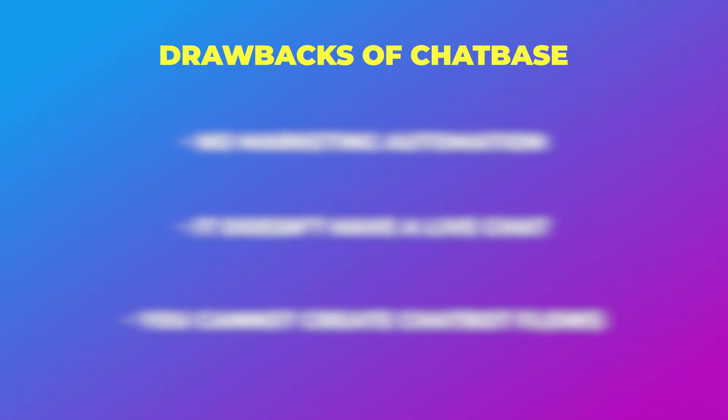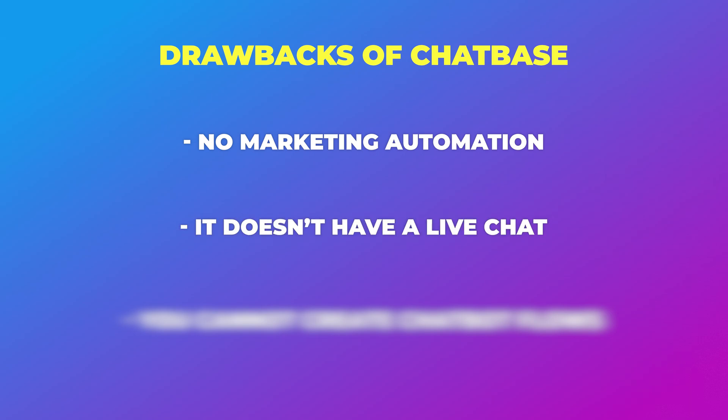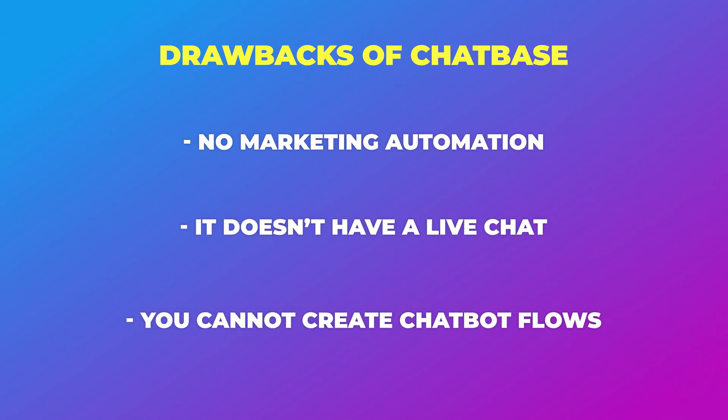But there are a few drawbacks of Chatbase. It's really good at training itself on documents or your website using AI, but that's basically all it's good at. It doesn't have marketing automation, it doesn't have a live chat, and you cannot create your own custom chatbot flows. So if you're looking for an automation platform with those features, a good connection with ChatGPT, and the ability to add it to many channels, then you should have a look at uChat.